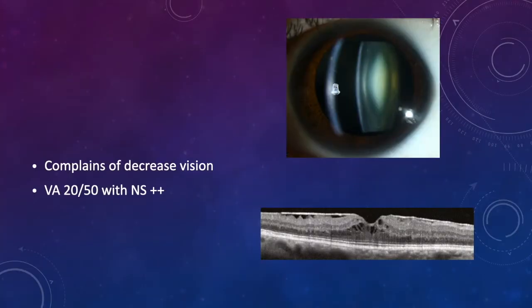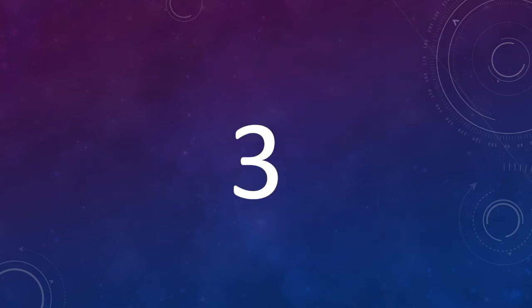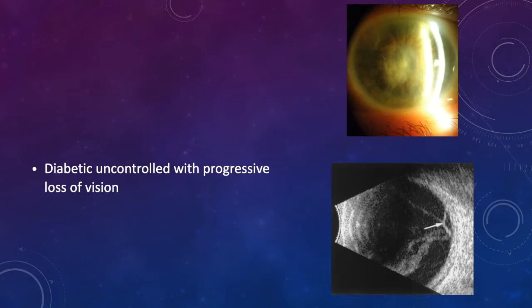In the second case, this patient complains of decreased vision and you see that he has a nuclear sclerotic lens and an epiretinal membrane. The third case is a diabetic who is poorly controlled and has decreased vision that's progressive. You look and see the cornea is opaque, cataract, and on the B-scan there's a TRD with the macula off.